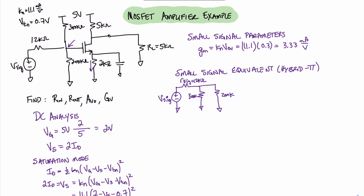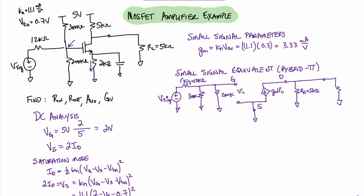Now we draw the equivalent circuit for the transistor. For a MOSFET, the hybrid pi model starts with an open circuit, and the source terminal is connected to ground. We have a dependent current source facing downward whose value is gm·Vpi, and that leads us to the drain terminal. At the drain terminal we have our 5 kilohm drain resistor facing downward to ground, and last we have our load resistance, which is also 5 kilohms. That completes our small signal equivalent circuit model.